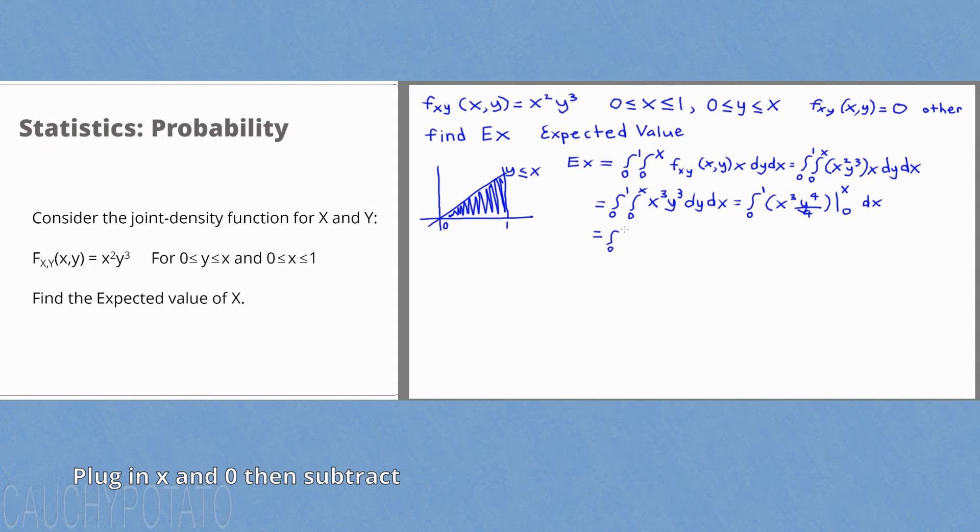Integral 0 to 1: insert the x and 0 to the y's. We get x to the third times x to the fourth over 4 minus x to the third times 0 to the fourth over 4 dx. The 0 totally negates the right side. Equals integral 0 to 1, x to the seventh over 4 dx.